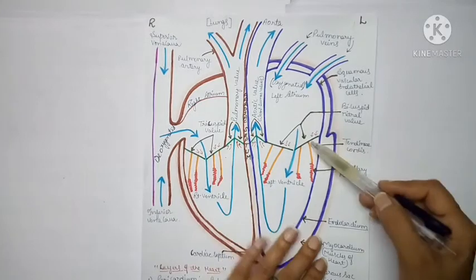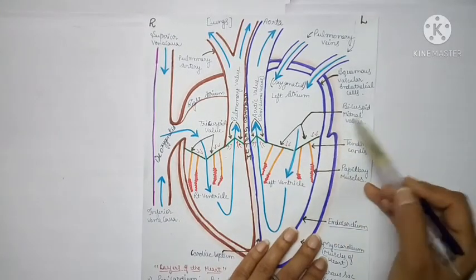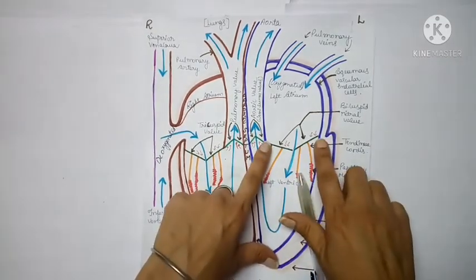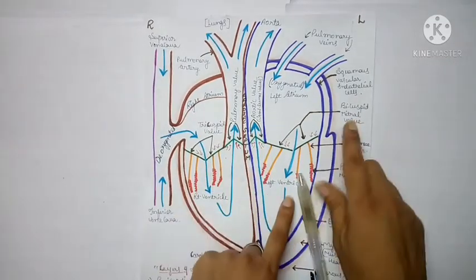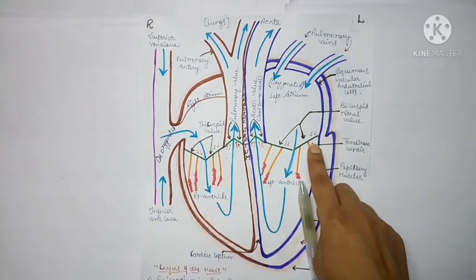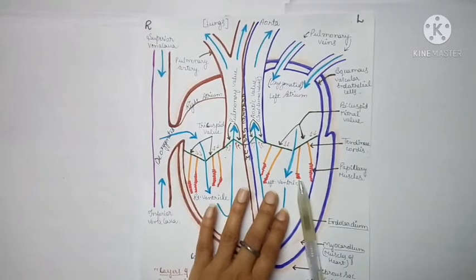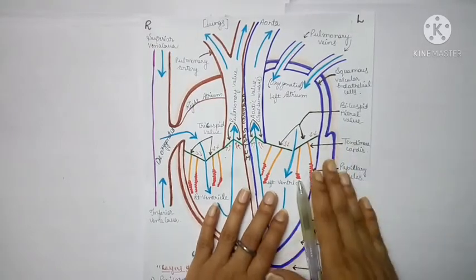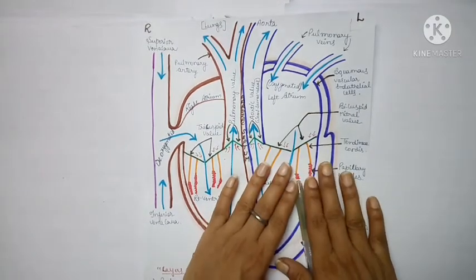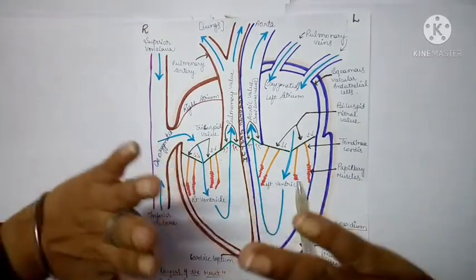After the left atrium, you will see two valves here, which we call the bicuspid mitral valve. Why bicuspid? Because there are two cusps present. And mitral because of its shape — the shape of this valve resembles a mitre.